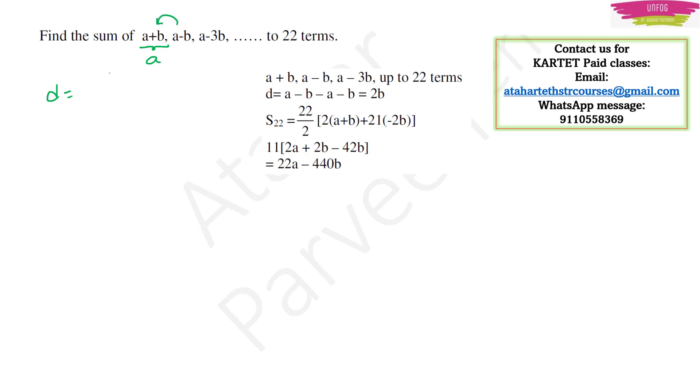What about the common difference? It will be second term minus first term. So it will be a minus b minus a plus b. So our common difference should be a minus b minus a minus b. So this thing will get cancelled and our common difference will be minus 2b.